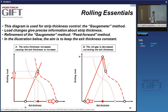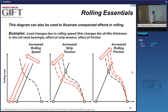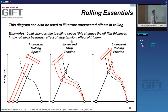If you get something thicker you need to reduce more — that's obvious — but the way it works is through an increase in pressure and load. Let's look at three interesting effects: what happens when rolling speed changes, when tension in the strip changes, and when friction changes.